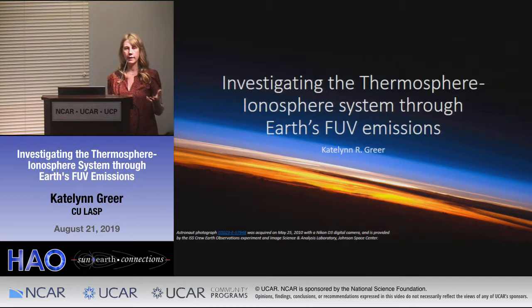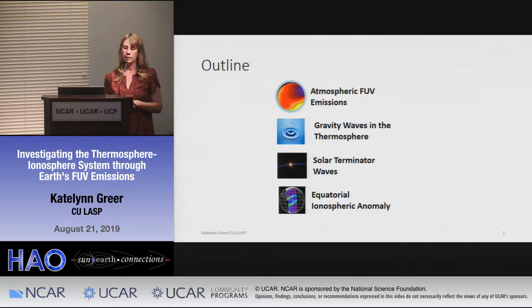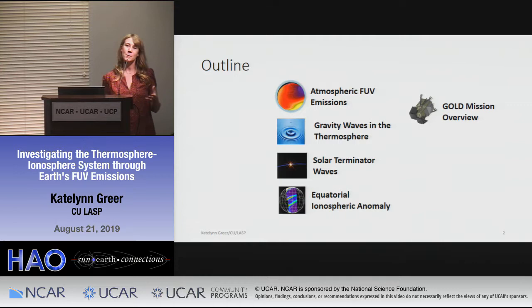I'm going to talk about Earth's far ultraviolet emissions and how we can investigate the ionosphere and thermosphere using those emissions. A quick outline: we'll talk about far ultraviolet emissions, gravity waves in the thermosphere, solar terminator waves, and finish up with the equatorial ionospheric anomaly — all woven together with a GOLD mission overview.